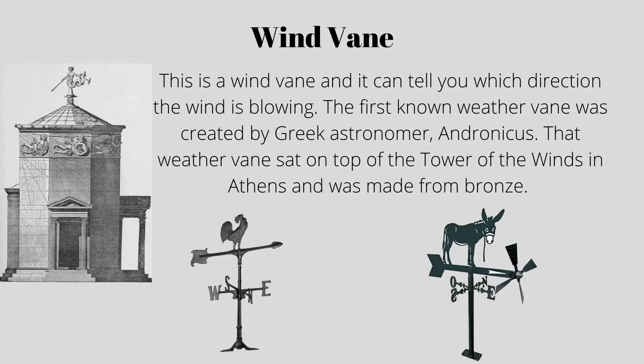This is a weather vane, and it can tell you which direction the wind is blowing. The first known weather vane was created by Greek astronomer Andronicus. That weather vane sat on top of the Tower of Winds in Athens, and it was made from bronze.